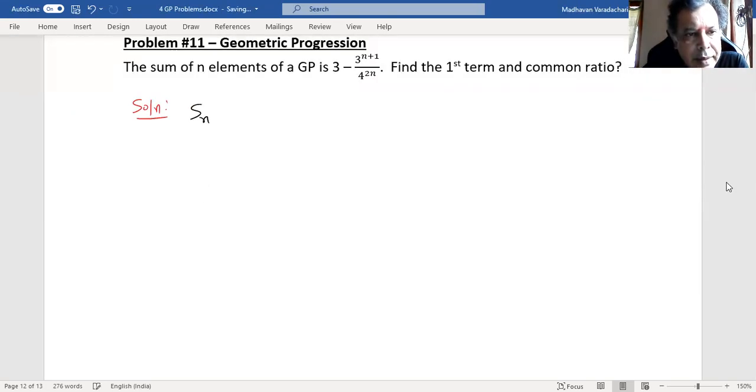So what is given is S_n equals 3 minus 3 to the power of n plus 1 by 4 to the power of 2n.